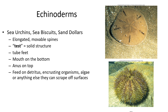Sand dollars, sea biscuits, and sea urchins also display penta-radial symmetry. They have an external structure called a test — the hard part — with little spines through holes in it. Their mouth is on the bottom of the test and their anus is on top. They feed on algae, dead things, and encrusting organisms. They are grazers, scraping whatever they can off surfaces.